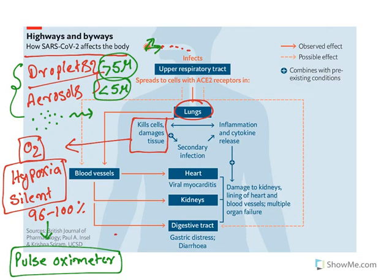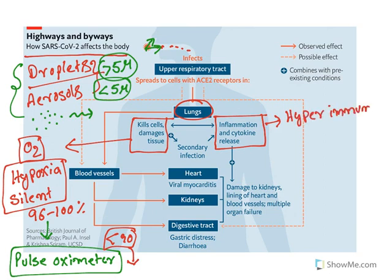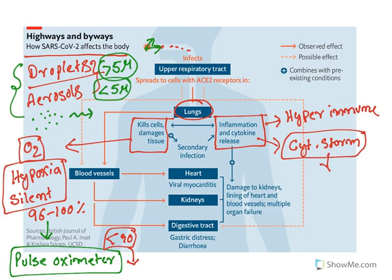When oxygen saturation falls below 90%, patients need ventilation or external support for respiration. COVID also causes inflammation and cytokine release — a hyperimmune response. In certain individuals, the immune response will be very hyper, resulting in a condition called cytokine storm. Cytokines are immune mediators, and this hyperimmune inflammation may result in death. Mortality is due to two major things: damage to the lungs leading to pneumonia and death, and hyperimmune response.